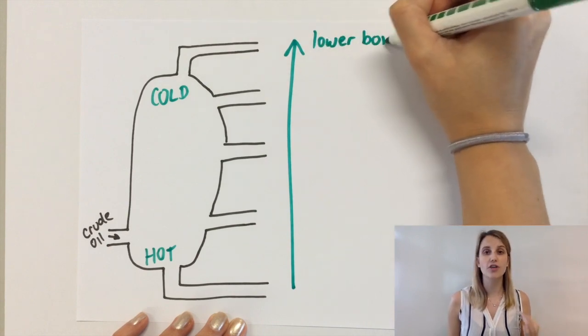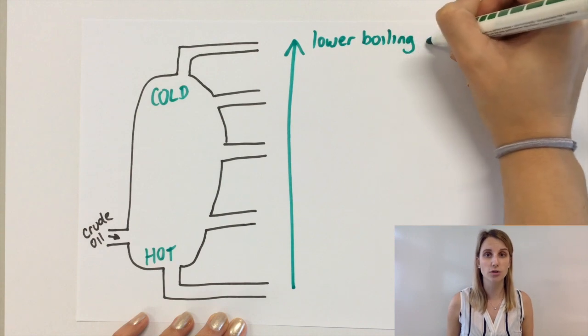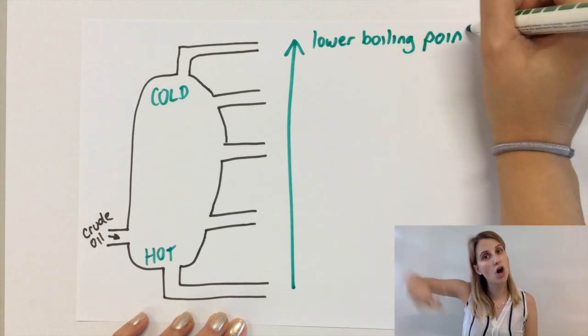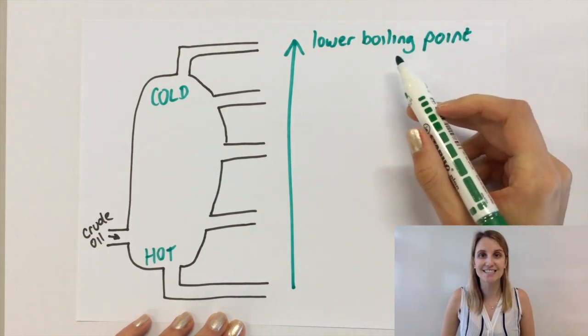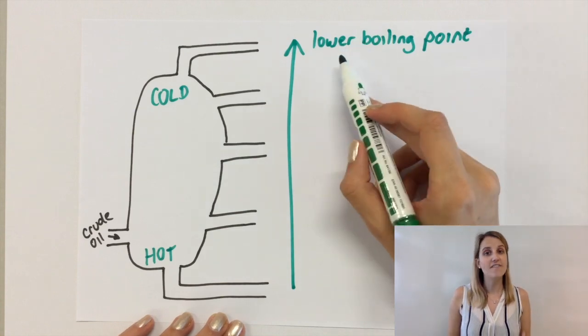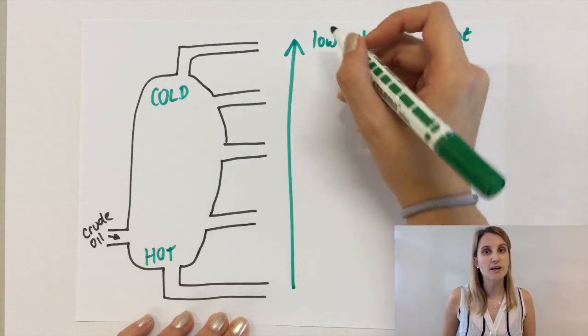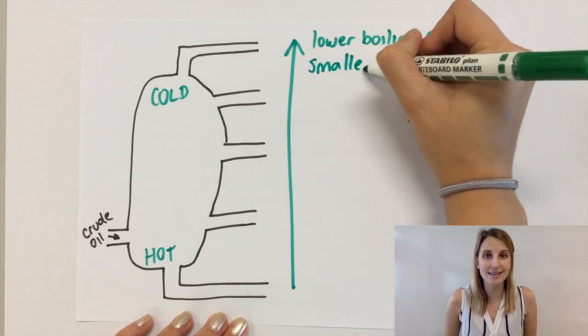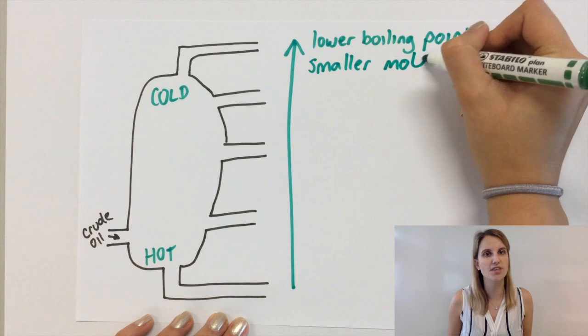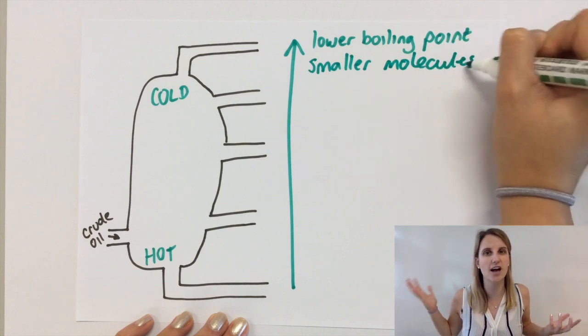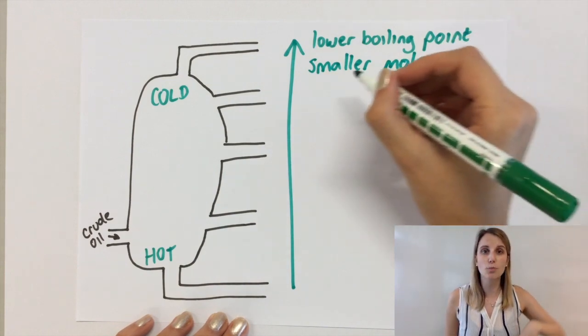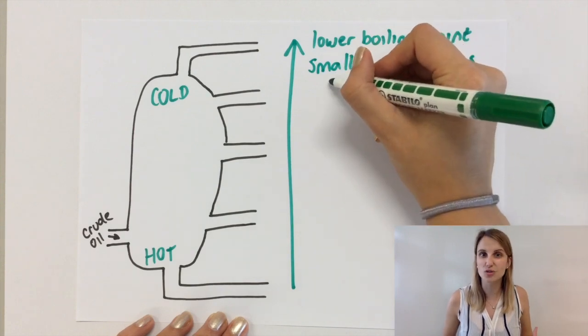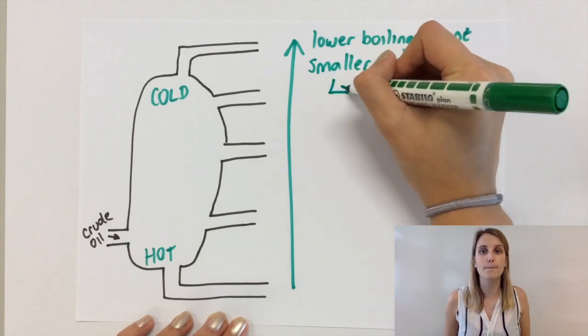We already know that the lower boiling point molecules will come off at the top of our fractional distillation column. The reason they have a lower boiling point is because they are smaller molecules, so you also get the much smaller stuff coming off at the top. The things with one, two, three carbons, and the ones with much more carbons, even up to a hundred or so, coming off at the bottom.